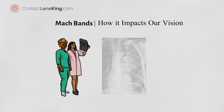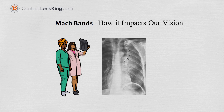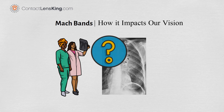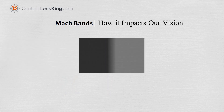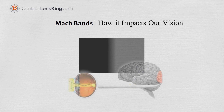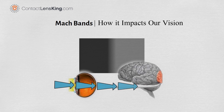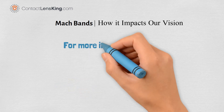Alternatively, the knowledge of this phenomenon might lead a radiologist to misinterpret a true shadow as a Mach Band effect and ignore it. The Mach Band illusion is a great example of how our eyes and brain can alter reality, and how this can have a real-life impact.